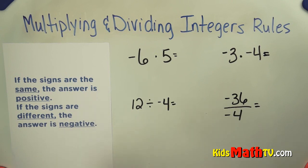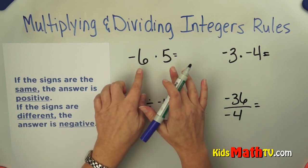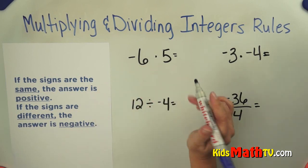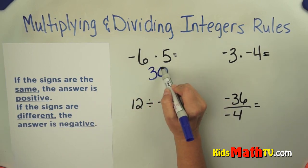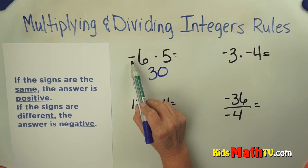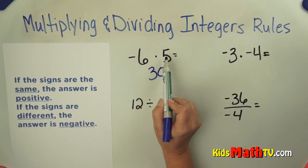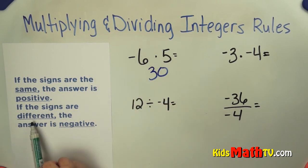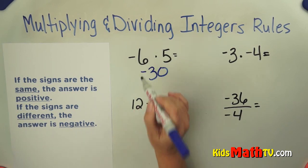So when I do multiplying or dividing integers, I just worry about the numbers first. 6 times 5 is 30. Then I look at the signs - are they both the same or are they different? They are different, so the answer is negative.